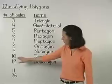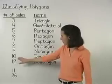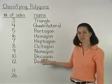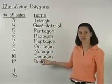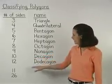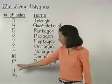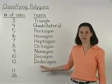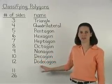If it has ten sides, it's called a decagon. And if it has 12 sides, it's called a dodecagon.